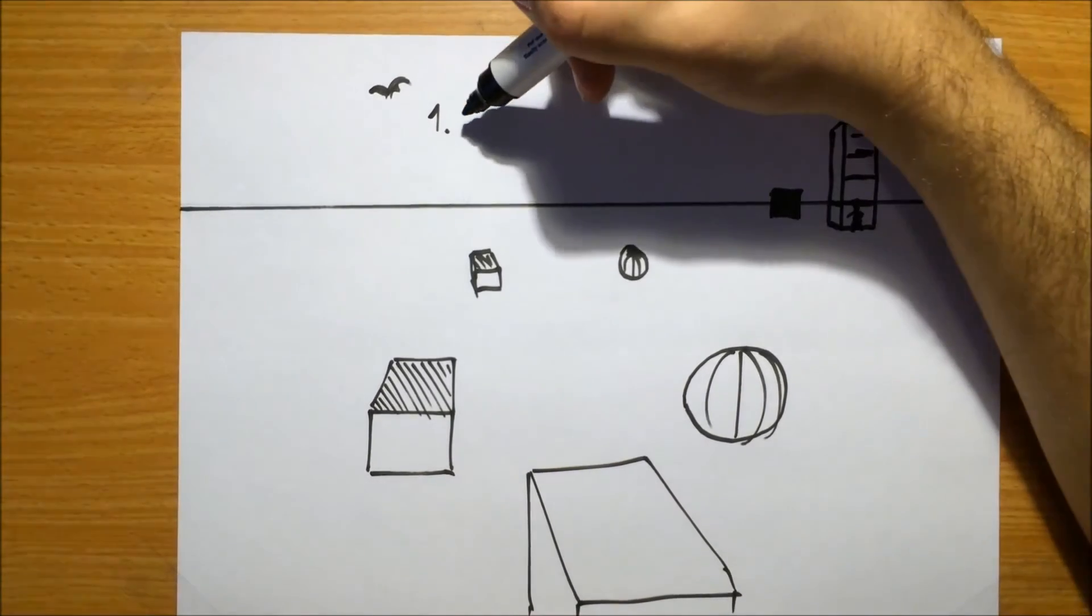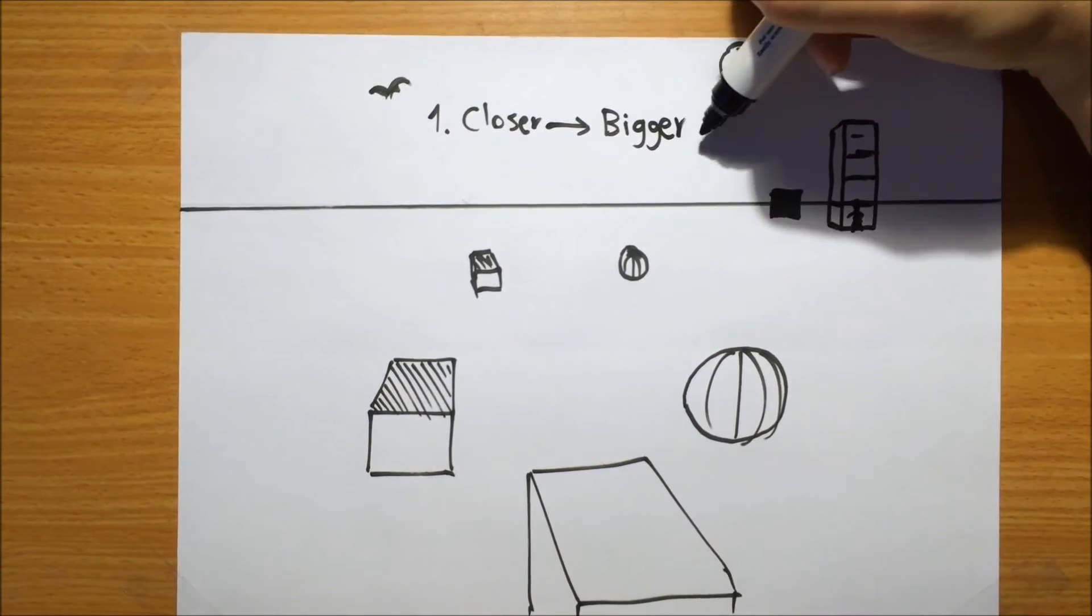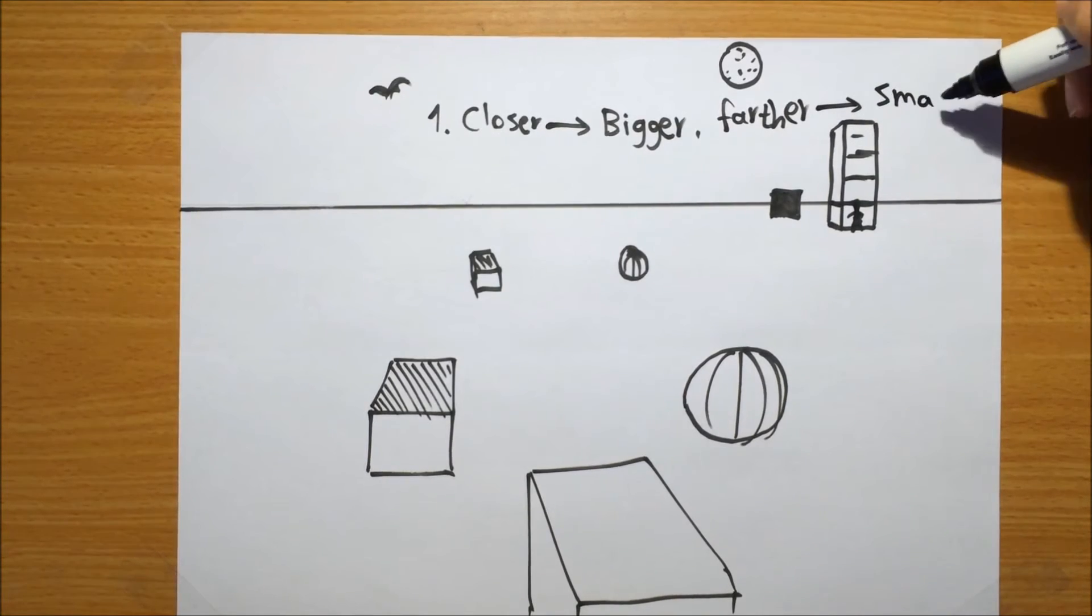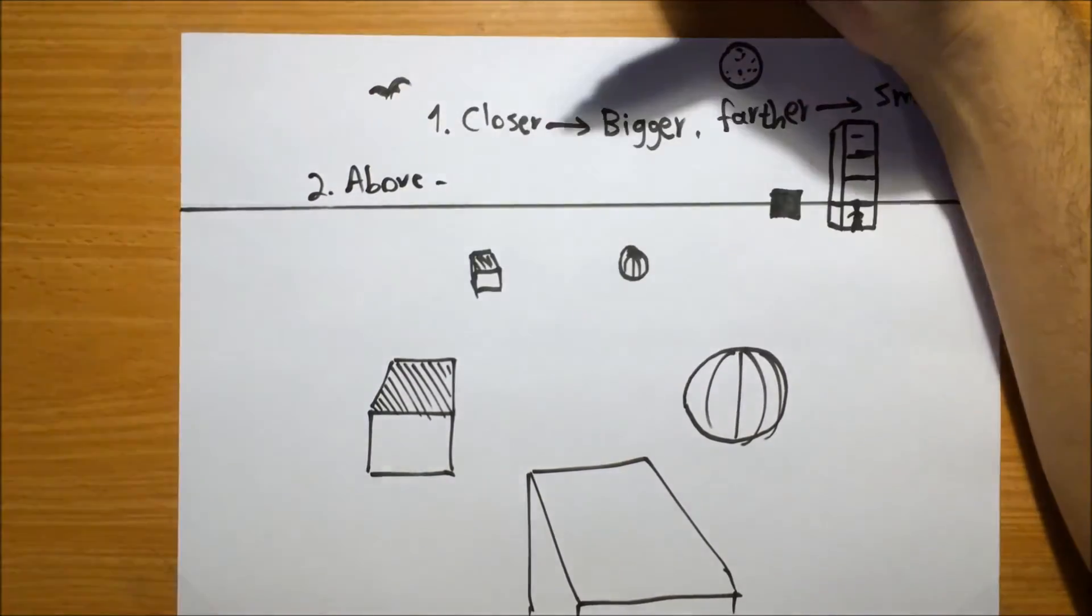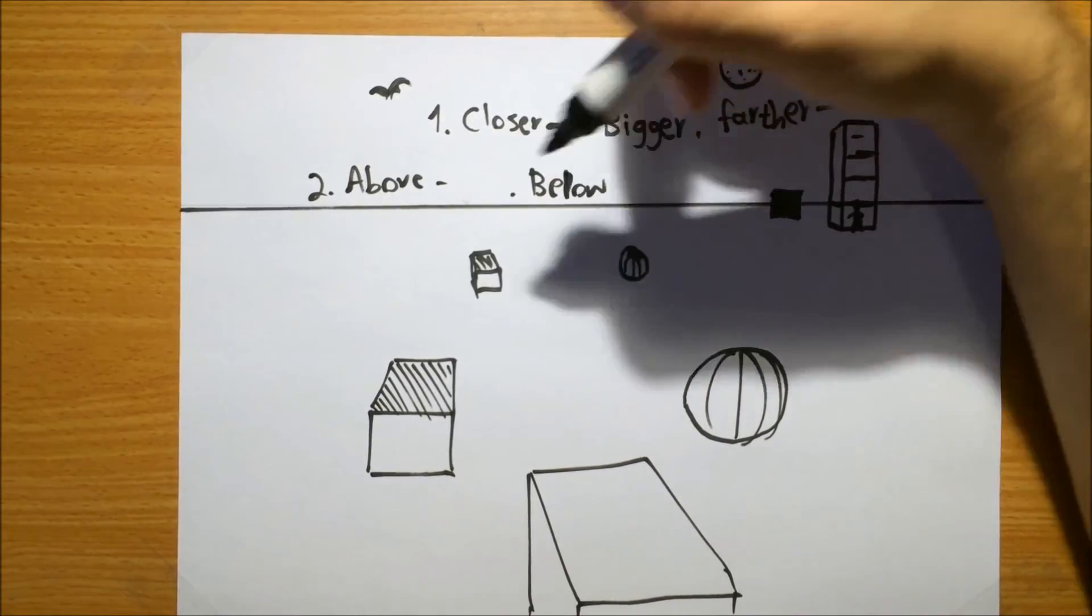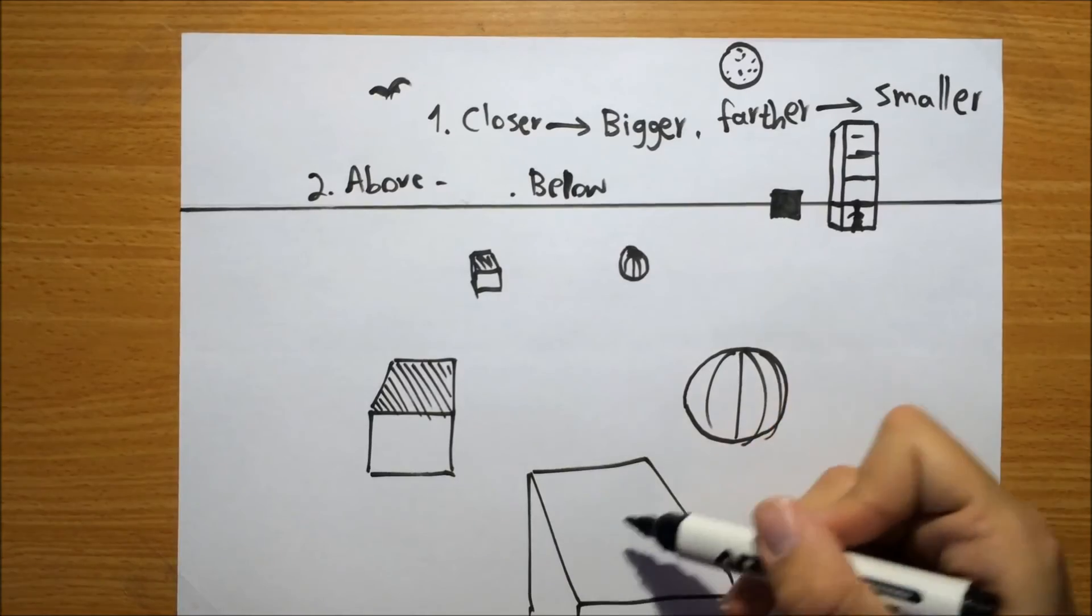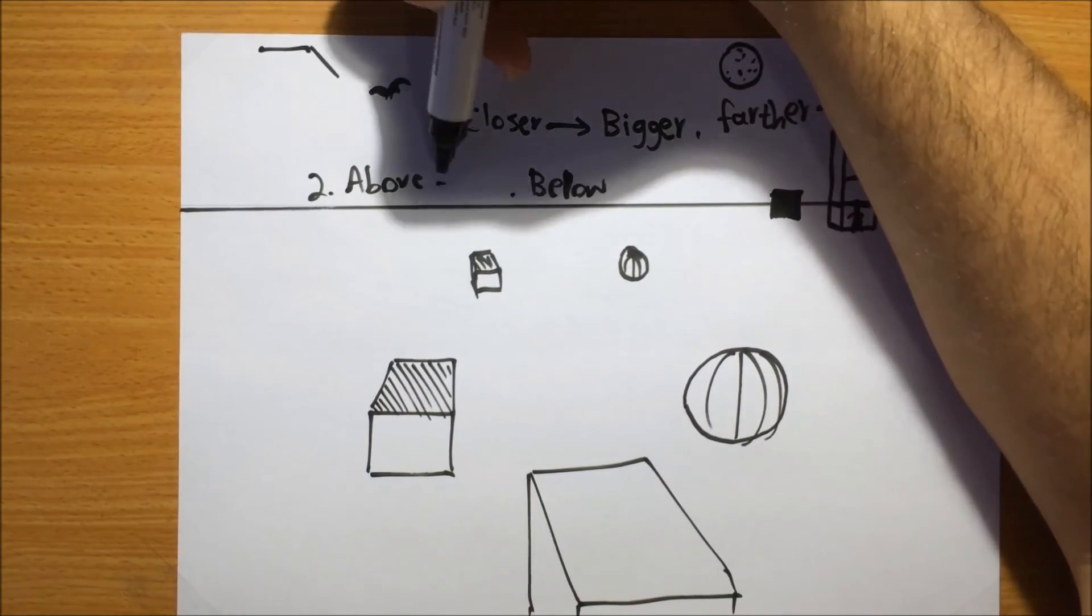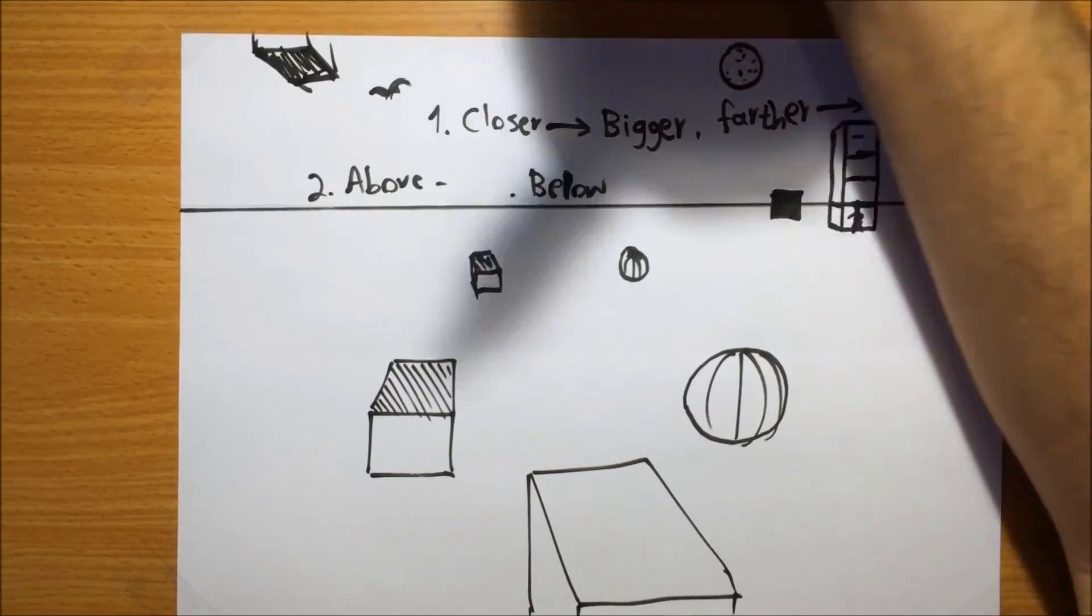So let's recap. The first rule is closer objects appear to be bigger or larger while farther objects appear to be smaller. Second rule above horizon. We're looking at from below and below horizon. I'll never be able to actually right here, below the horizon. We're looking at from above. This is why we can see the top sides of these cubes. We can again, draw another cube or box that's above the horizon line like this, and we will be able to see its bottom side. Sorry for the messy drawing, but we will be able to see the bottom side here.